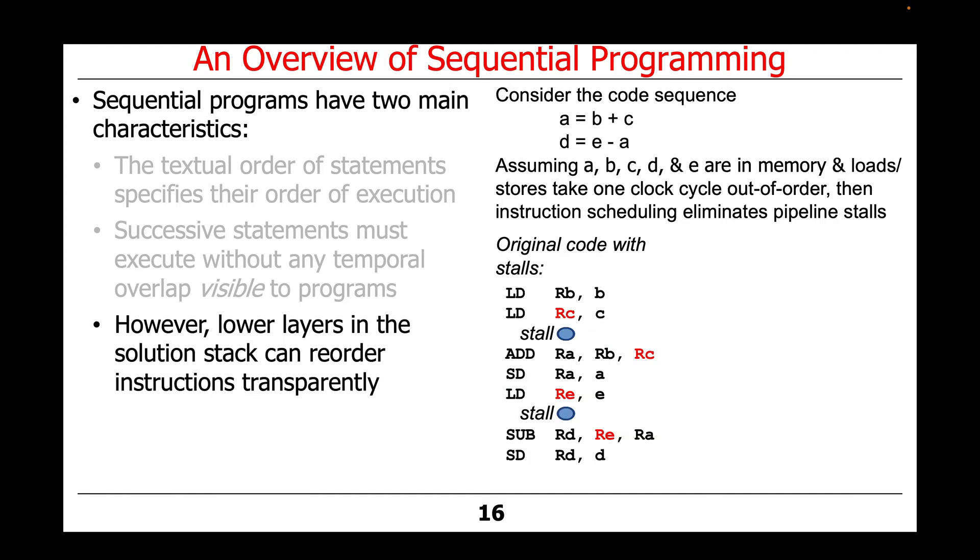Here's the original code that might be generated by a compiler that does not eliminate pipeline stalls. We load the value of B from memory into a register. We load the value of C into a register. But because there's one instruction cycle required to do this, there would otherwise be a pipeline stall at this point. The next two instructions are adding B and C into register A and then storing register A into the memory location A.